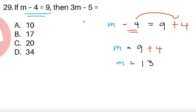So all we have to do is substitute 13 into this equation, so we're going to have 3 times the value of m, which is 13, minus 5. So 3 times 13, that's 39, so we're just going to have 39 minus 5, which gives us 34. So we have choice D for this item.